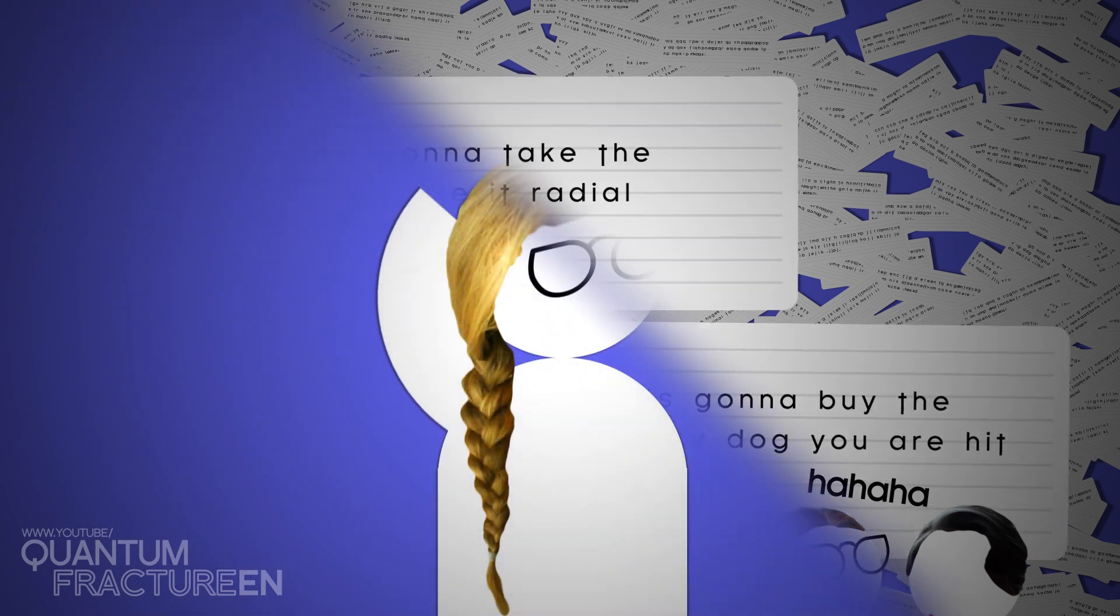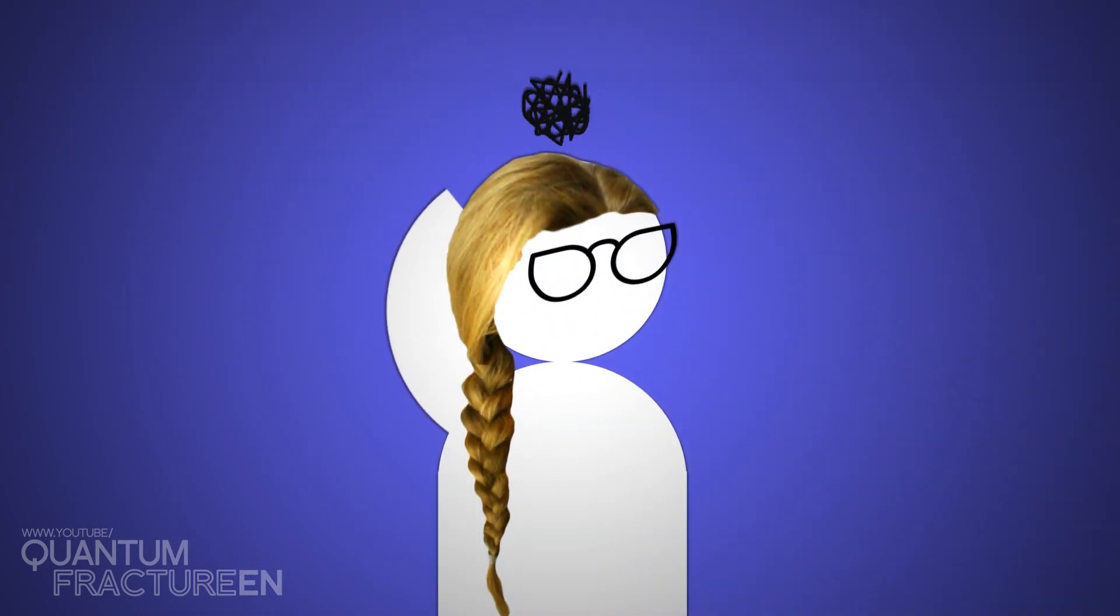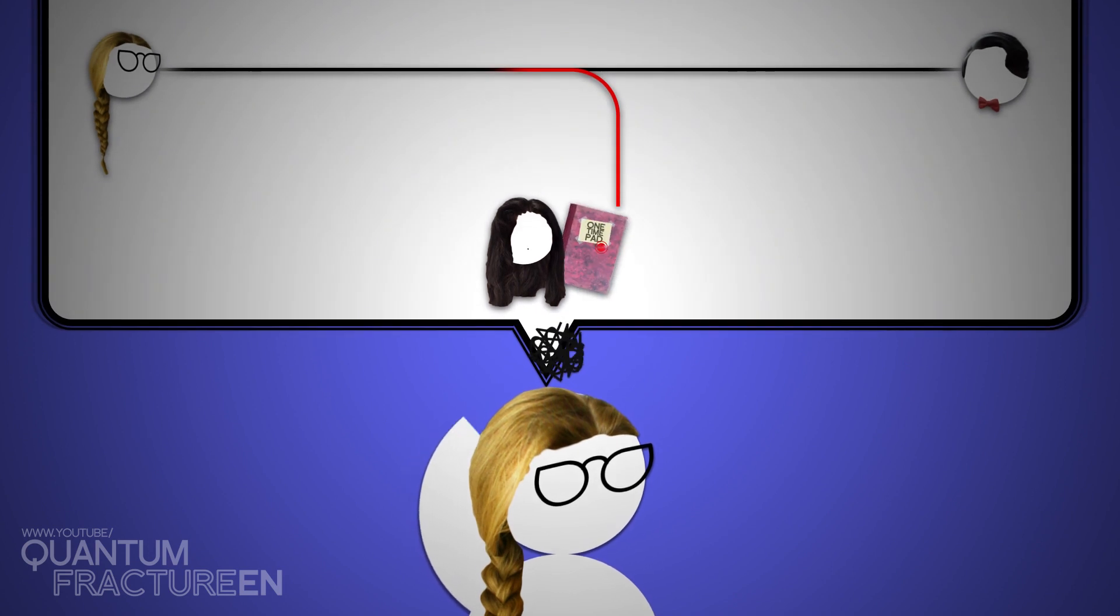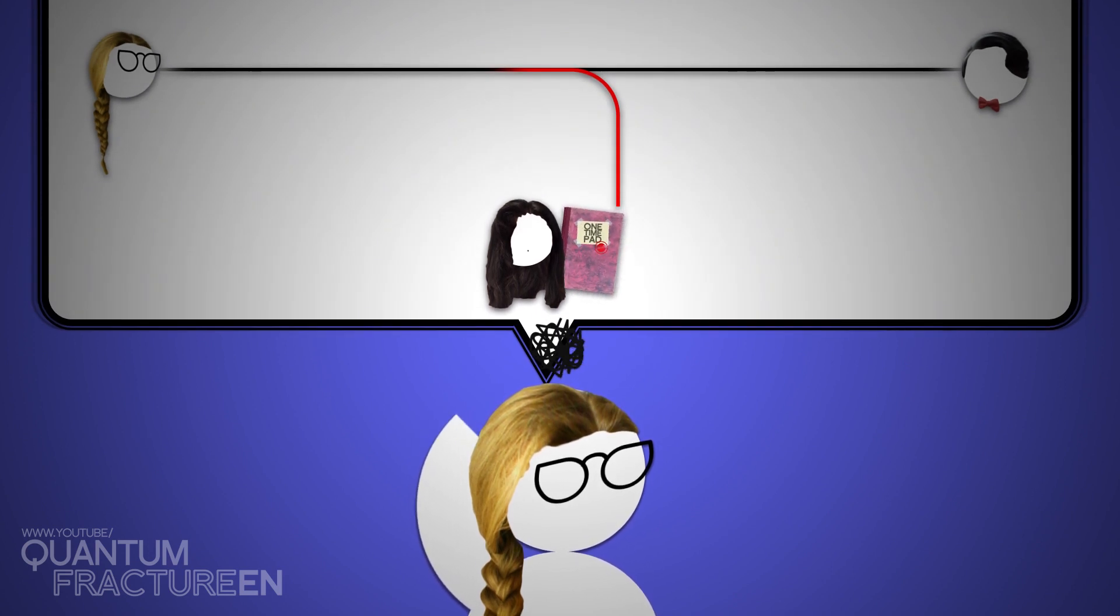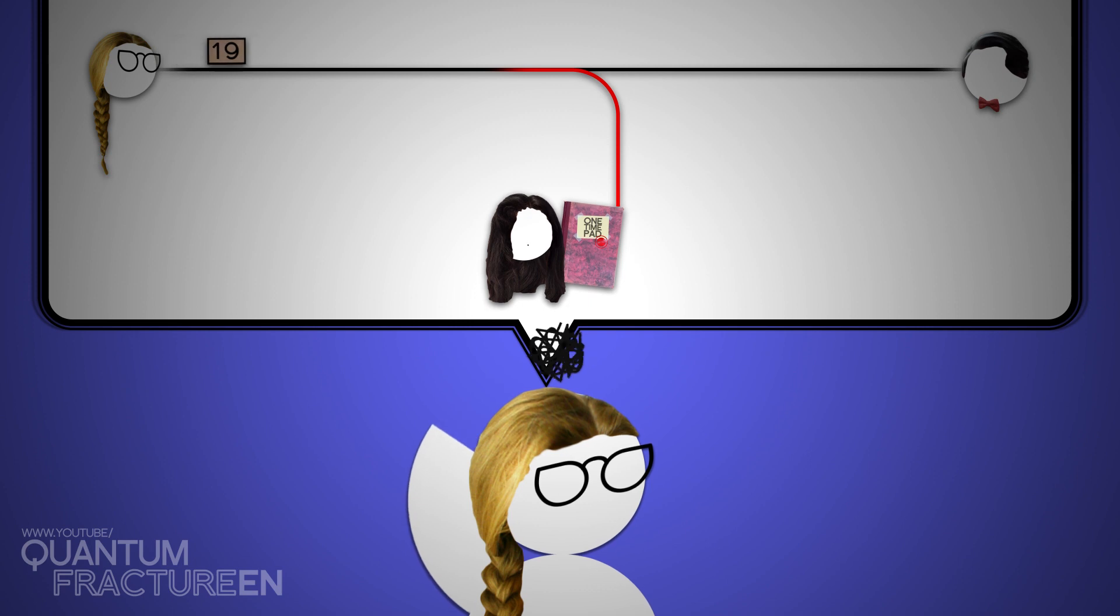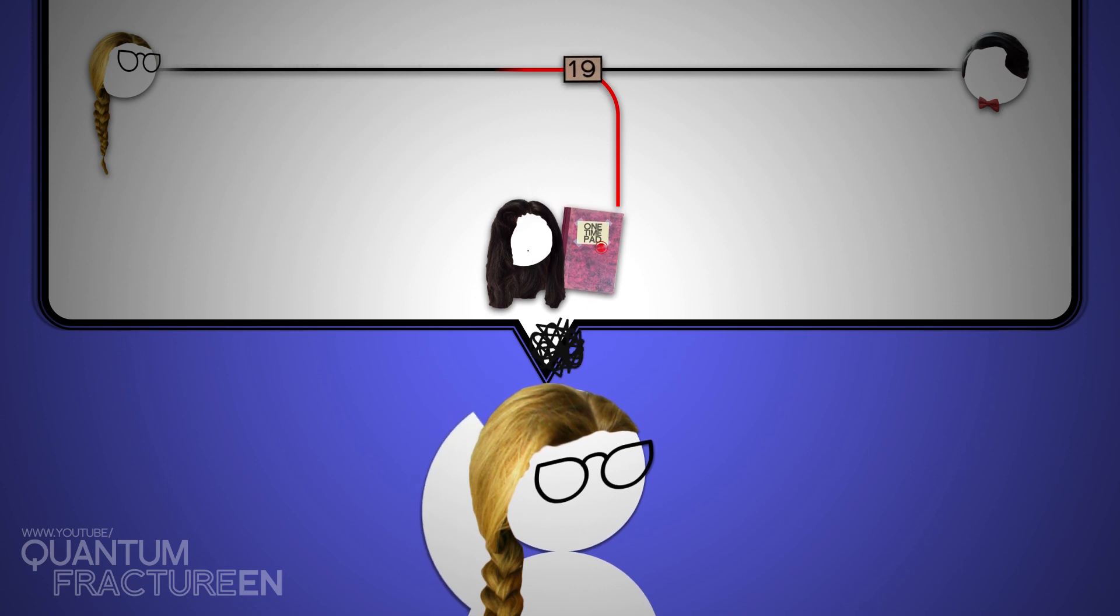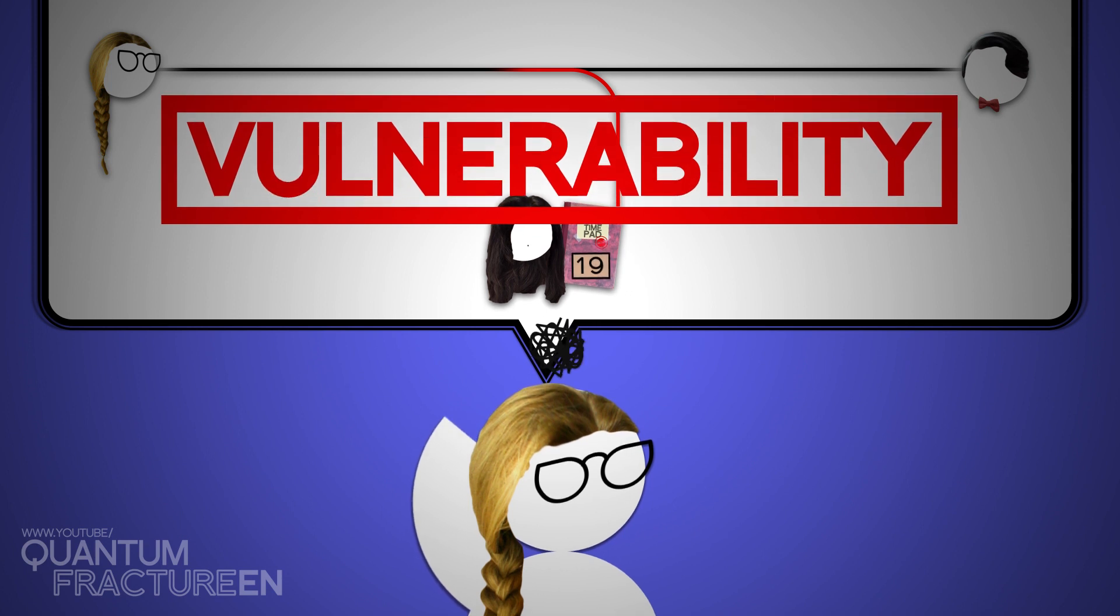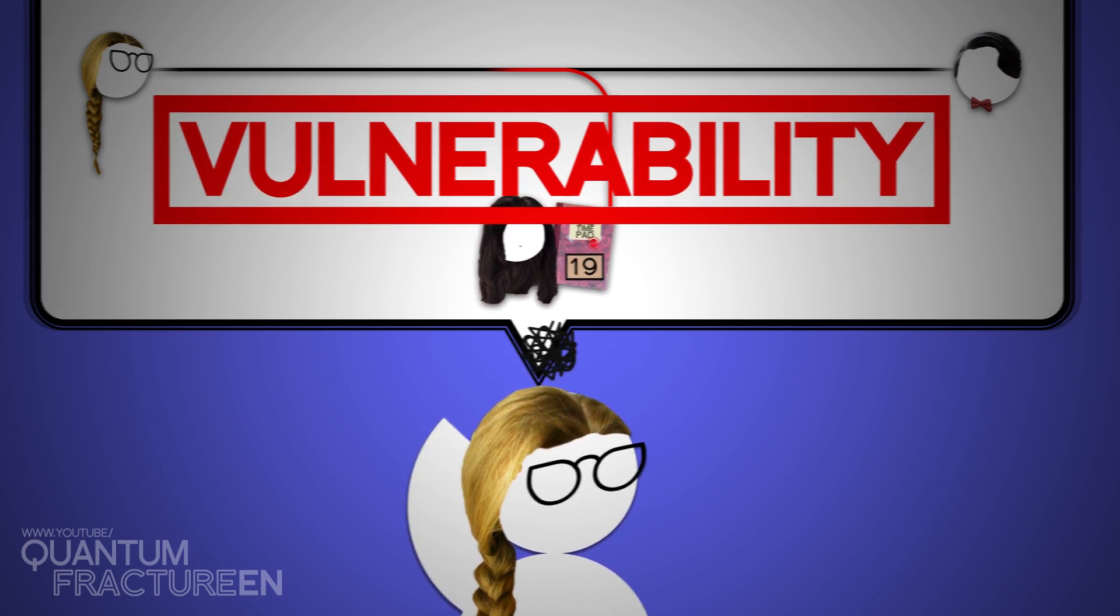Bob starts preparing the pads to send one to Alice, but suddenly she realizes there's a flaw in their plan. What if Eve gets her hands on a copy of the pad? Plus, Alice has to tell Bob which page she used as the key. What if Eve intercepts it? The key is too vulnerable. They have to find a 100% foolproof solution.